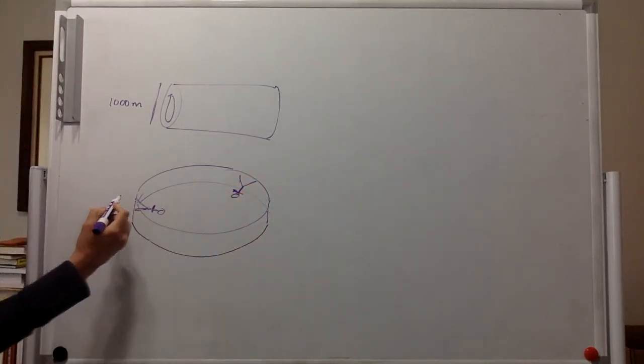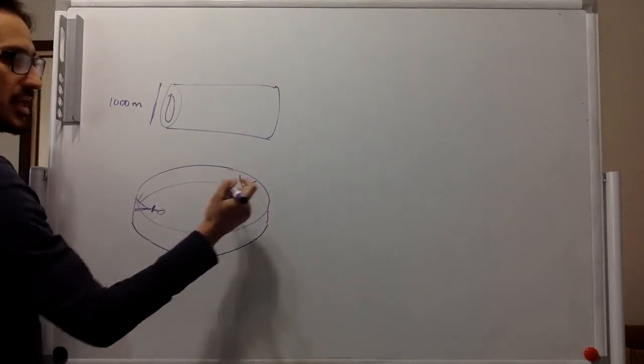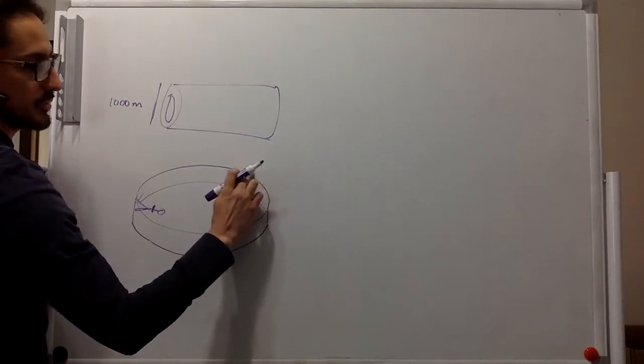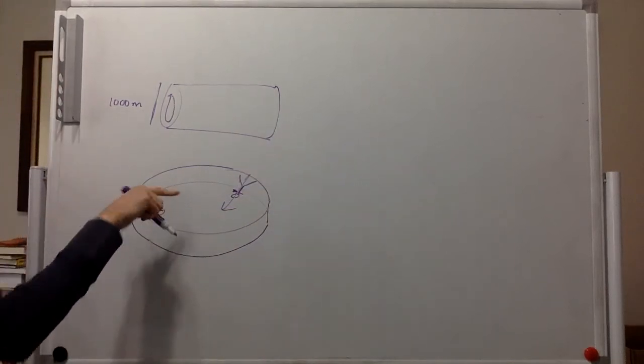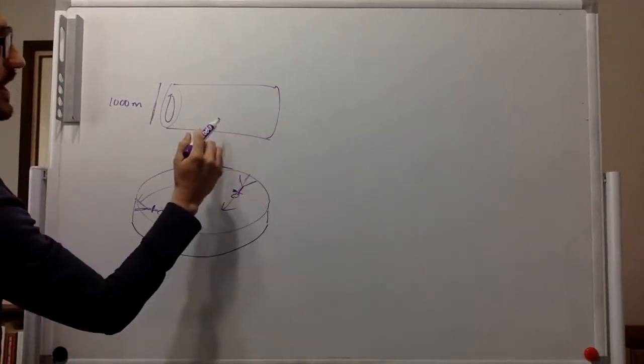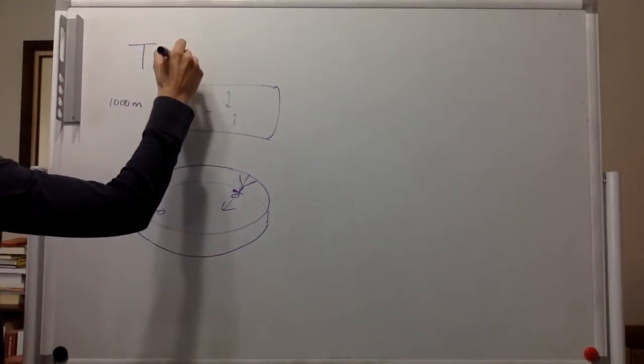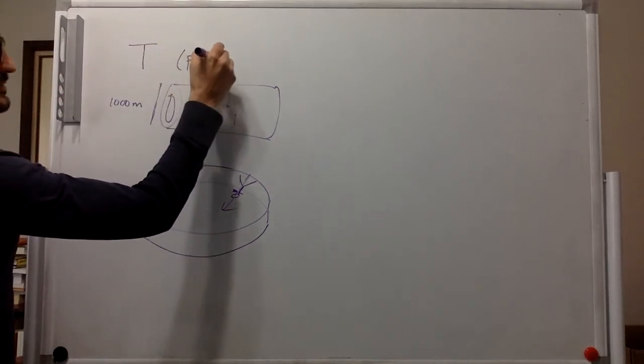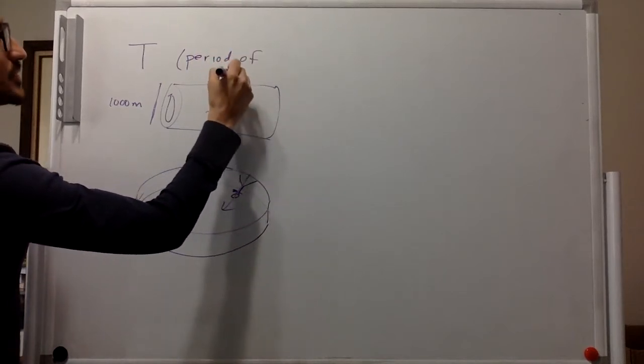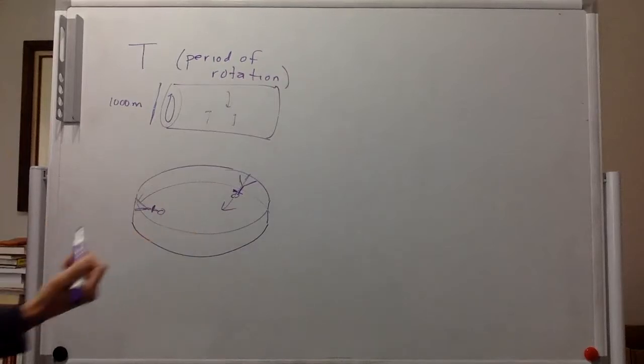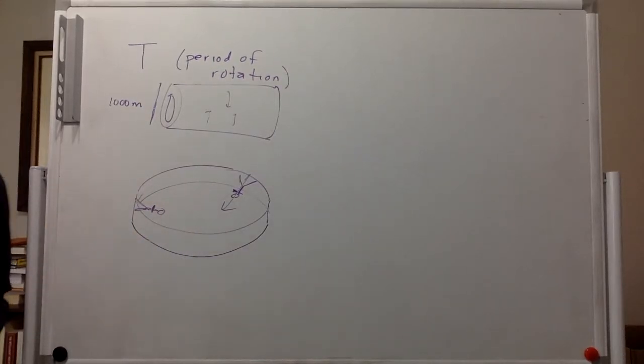It doesn't matter. So there's going to be a normal, I guess that's what we feel, a normal in this direction towards the axis of rotation of the cylinder. So we're being asked to get the period of rotation. So how long should each rotation take?